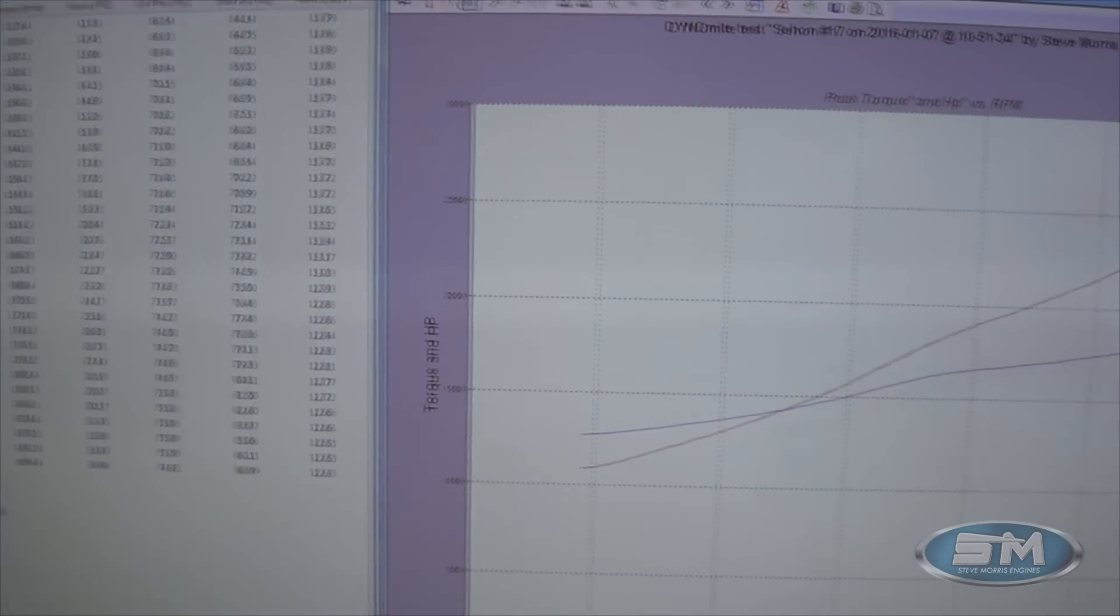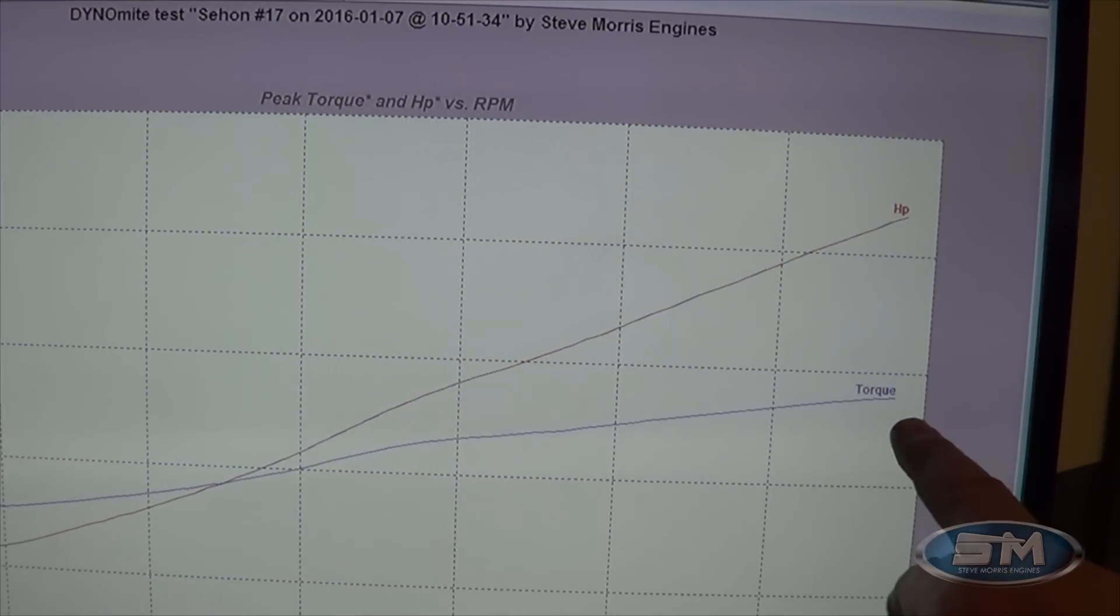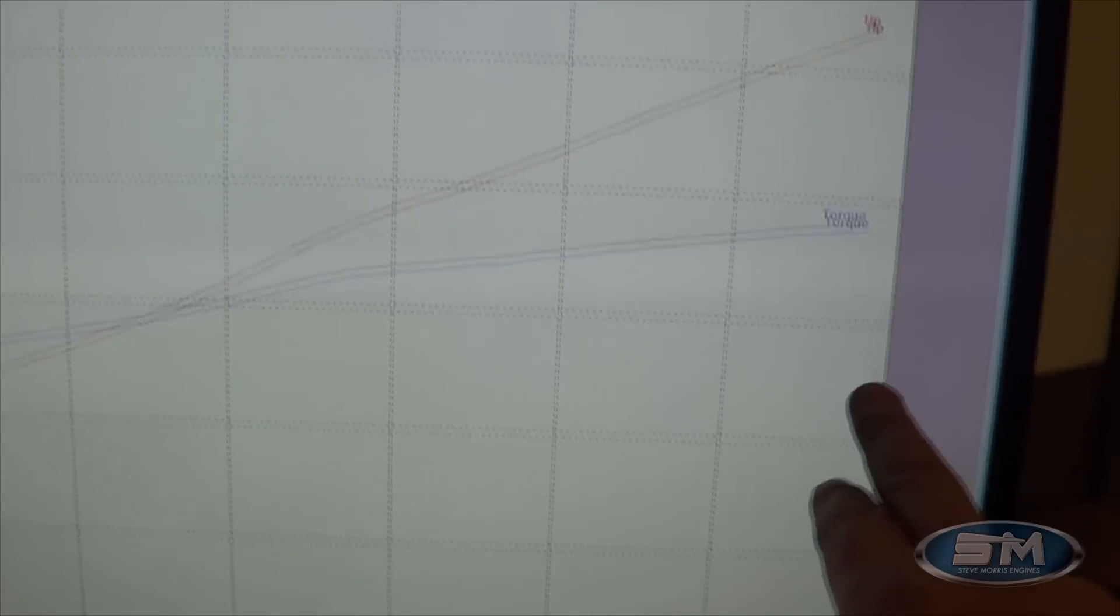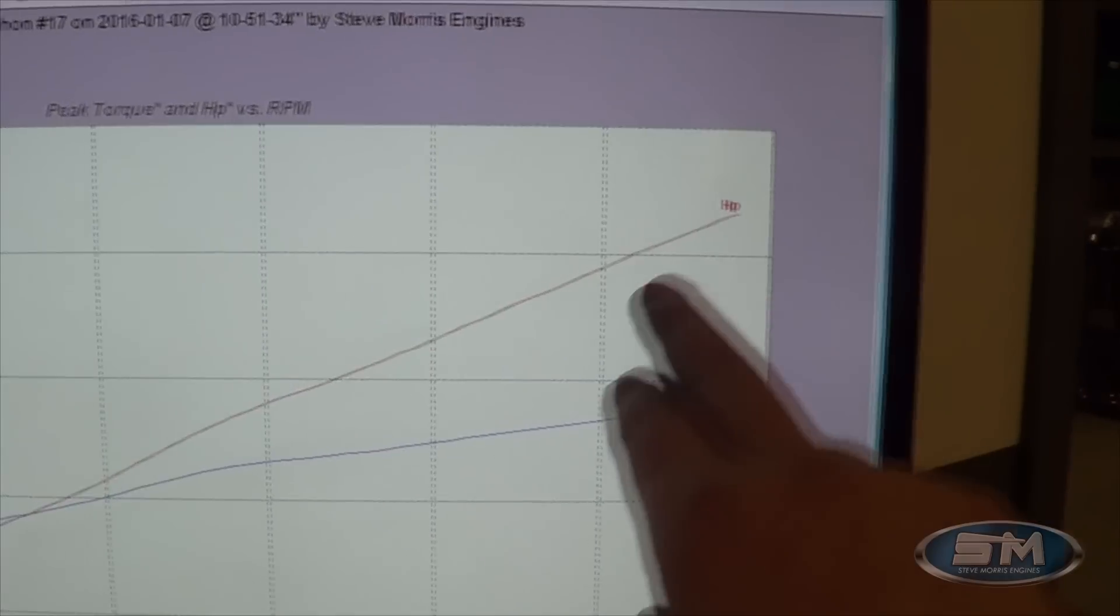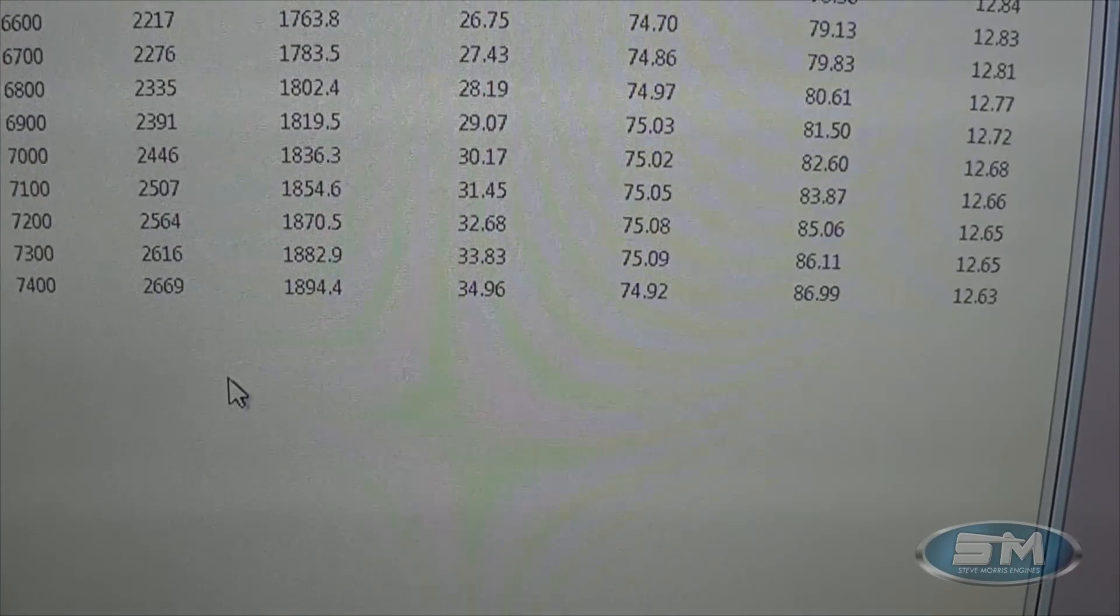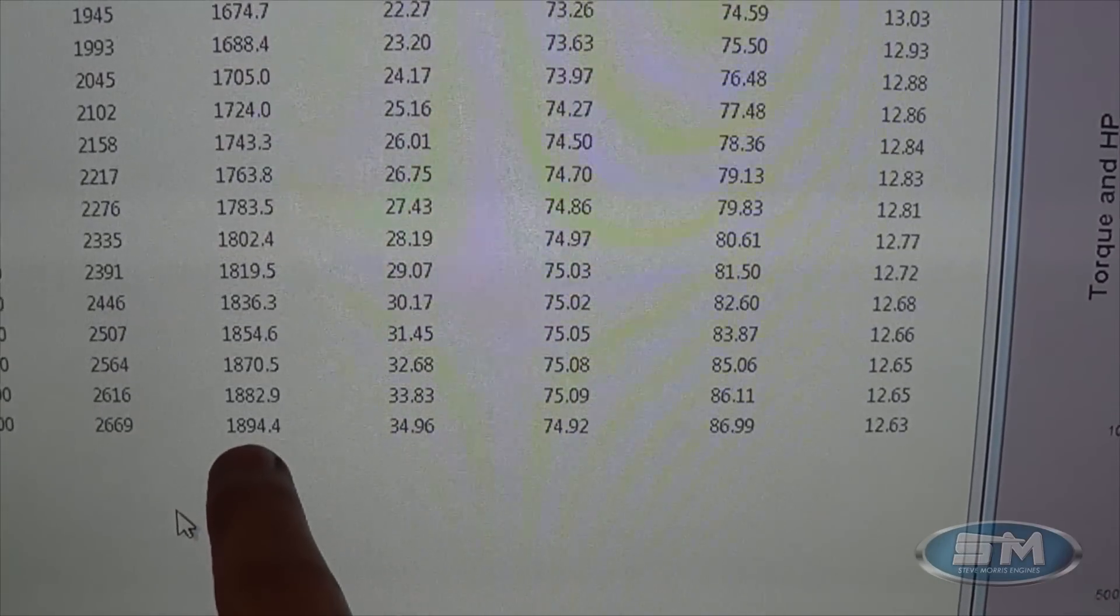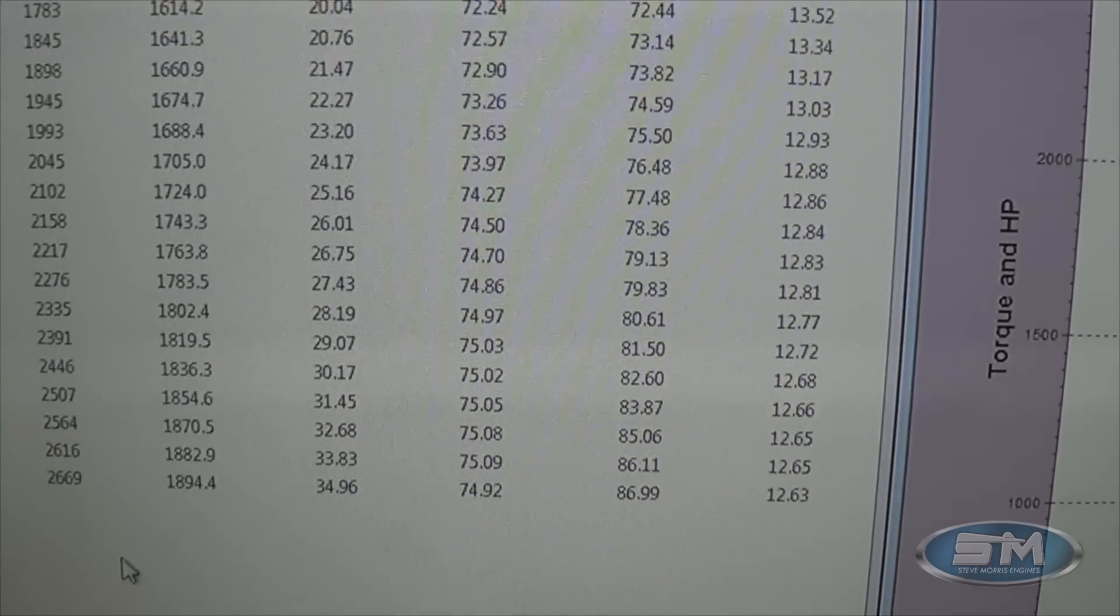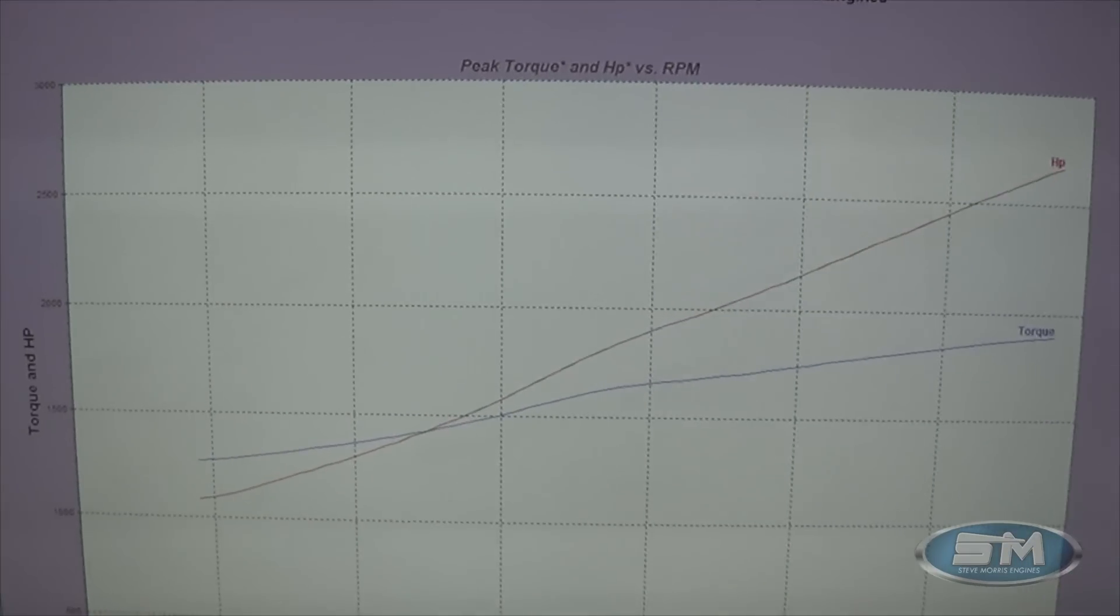As you can see, a nice typical ProCharger centrifugal type power curves and torque curves. This was at 7,500 RPM, 7,400 RPM. Like I said, we're already exceeding because that is 2,669 horsepower at 7,400 RPM, 1,894 foot-pounds of torque at 35 pounds of boost. That's exceeding just a little bit of what we rate this motor at or actually what we build it to and have designed it for.